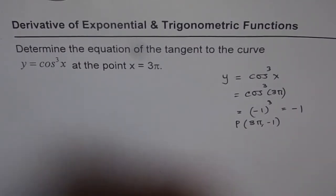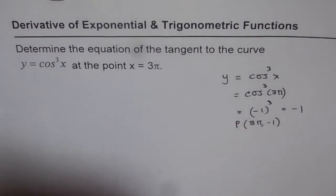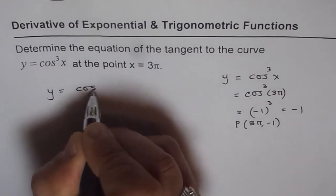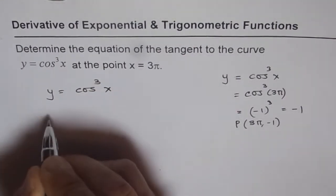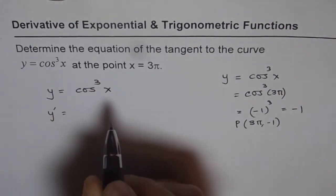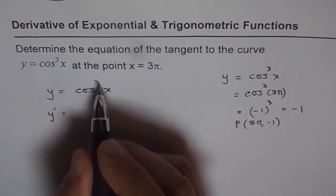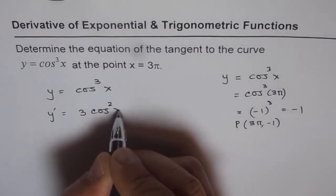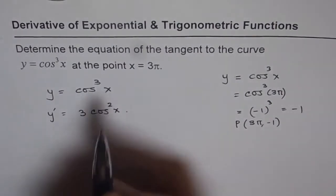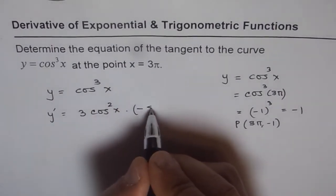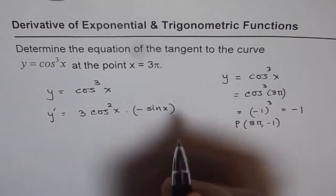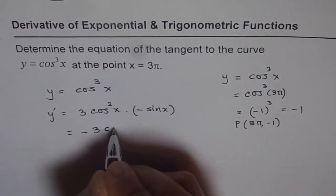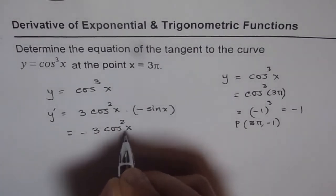Let us find the slope now. We are given the function y = cos³x. Applying the chain rule: y' = 3cos²x · (-sin x) = -3cos²x sin x.